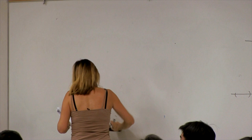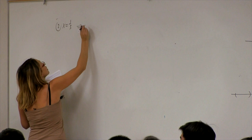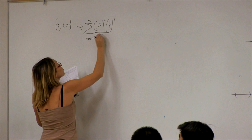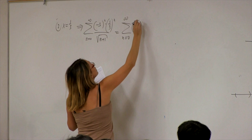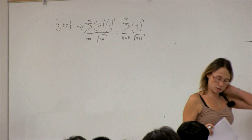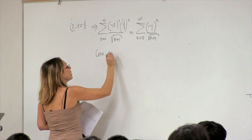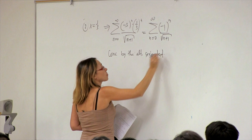The second case is x equals 1/3. We have (−3)^n · (1/3)^n / √(n+1), which is (−1)^n / √(n+1). This is an alternating series — an excellent candidate for the alternating series test. The terms bₙ = 1/√(n+1) decay to 0, so this converges by the alternating series test.